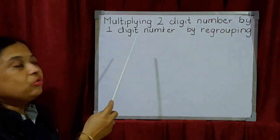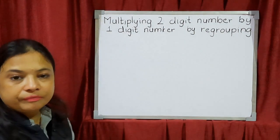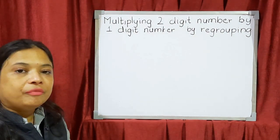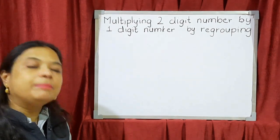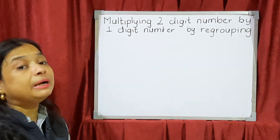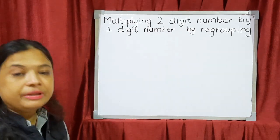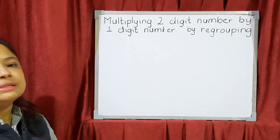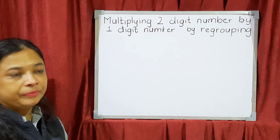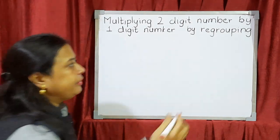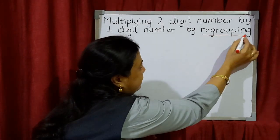Today we are going to learn multiplying a two-digit number by a one-digit number with regrouping. We have already studied multiplication of a two-digit number by a three-digit number but that was without regrouping. Now we are going to study with regrouping. What is the meaning of regrouping?